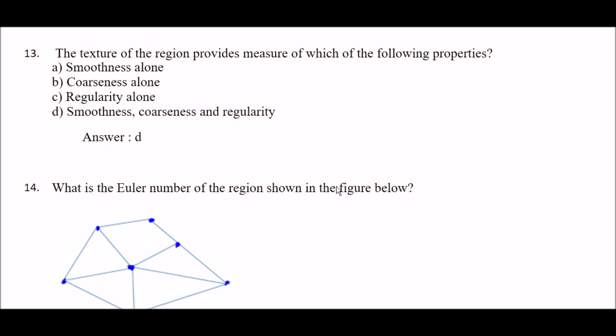Next question: the texture of a region provides a measure of which of the following properties? Option A: smoothness alone, option B: smoothness alone, option C: regularity alone, option D: smoothness, coarseness, and regularity. The right answer is option D — it includes smoothness, coarseness, and regularity.